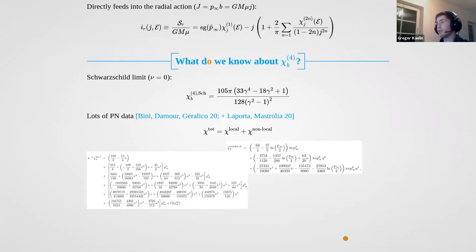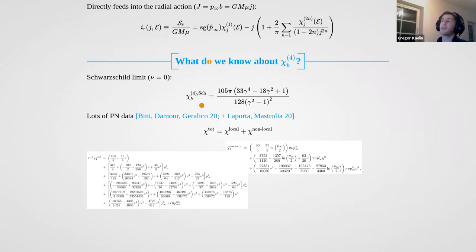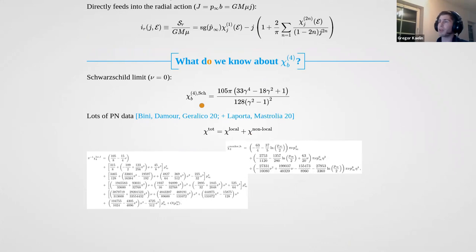That's where you want to go — you want the 4PM scattering angle. We already know there's the test-particle limit, which is the limit where one of the bodies is a really heavy black hole and essentially there's just a test particle going around it or scattering with it, going along a geodesic. Additionally, we have a lot of PN data. I'm just showing you here the current state of the art.